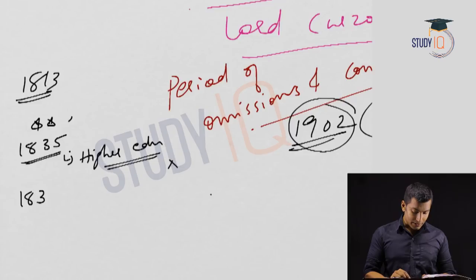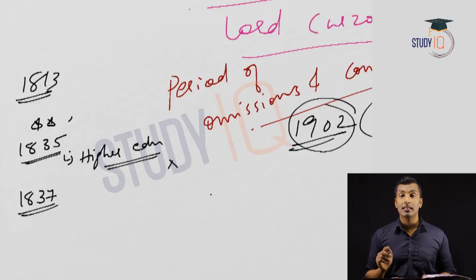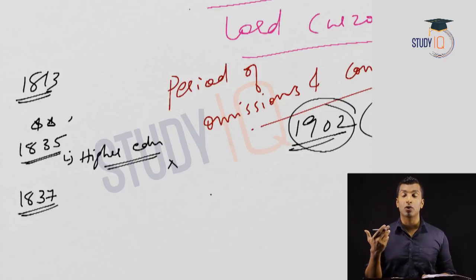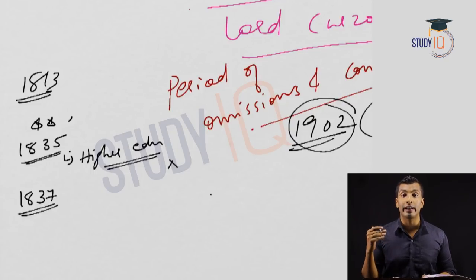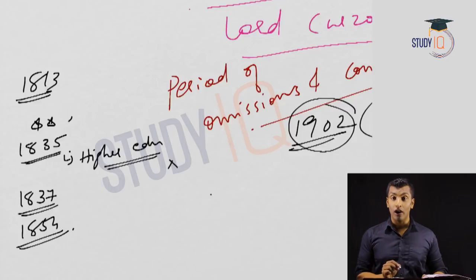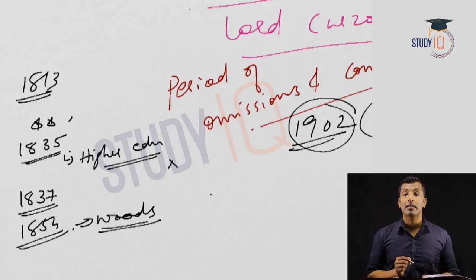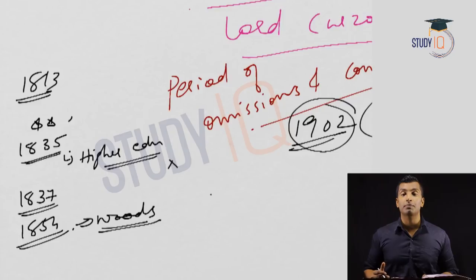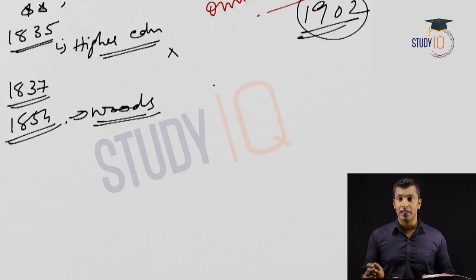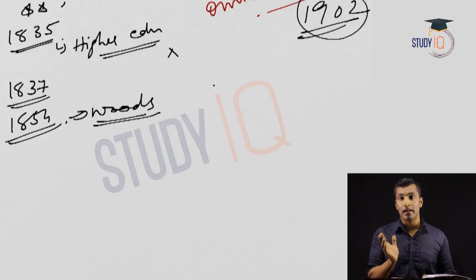In 1837, Persian was replaced with English as the official language, creating a lot of problems for Muslims who lost key positions they had held. After that, the most important development was Wood's Dispatch in 1854, called the Magna Carta of modern Indian education, because the government took up responsibility of giving education to the masses.